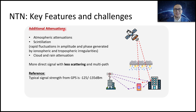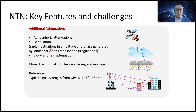Another challenge is additional attenuation — the large attenuation of signals compared to terrestrial networks. This includes atmospheric attenuation and scintillation, which is a very interesting phenomenon of rapid fluctuations in amplitude and phase of the signal. Of course, clouds and rain can also affect signal strength, and this heavily depends on frequency bands, especially for millimeter waves.